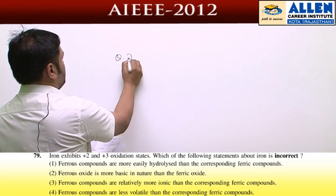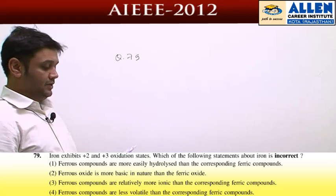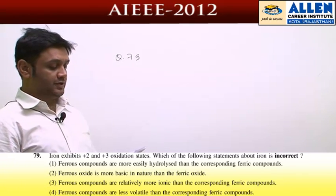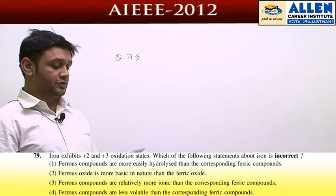Question number 79: Iron exhibits +2 and +3 oxidation states, and we have to identify which statement might be incorrect.